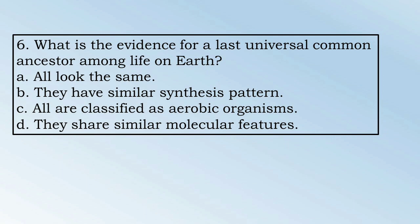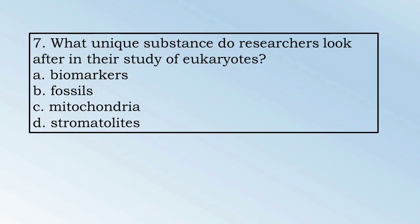Number 6. What is the evidence for last universal common ancestor among life on Earth? A. All of them are the same. B. They have similar synthesis patterns. C. All are classified as aerobic organisms. Or D. They share similar molecular features. Number 7. What unique substance did researchers look after in their study of eukaryotes? A. Biomarkers, B. Fossils, C. Mitochondria, or D. Stromatolites.